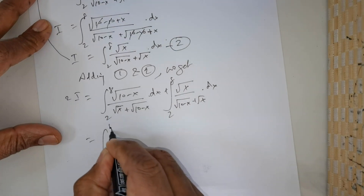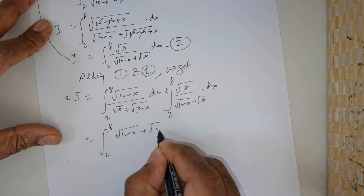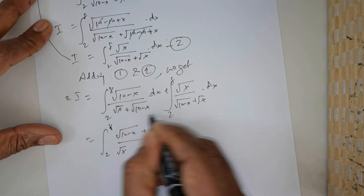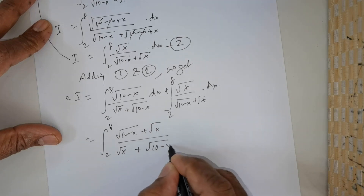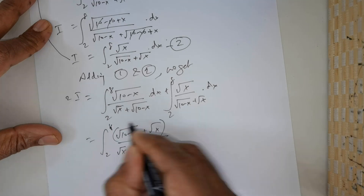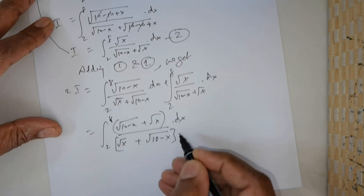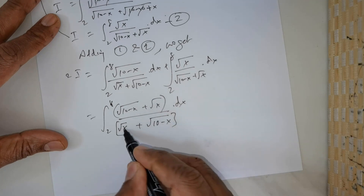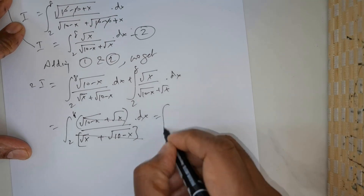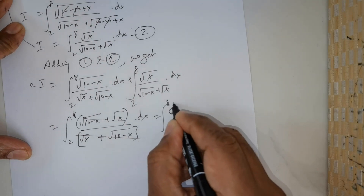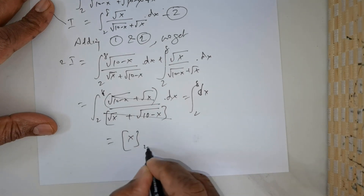This can be rewritten as the integral from 2 to 8 of [√(10 - x) + √x] divided by [√x + √(10 - x)] dx. Since the denominator is common, and the numerator equals the denominator, they cancel out. This gives us the integral from 2 to 8 of dx, which equals x evaluated from 2 to 8.